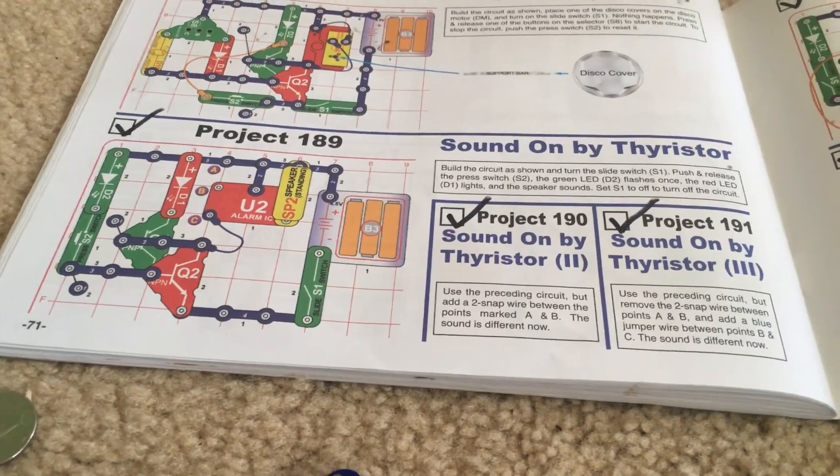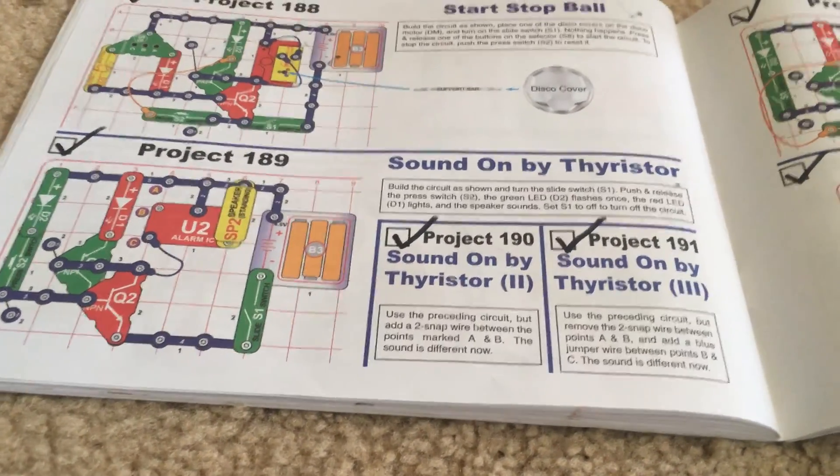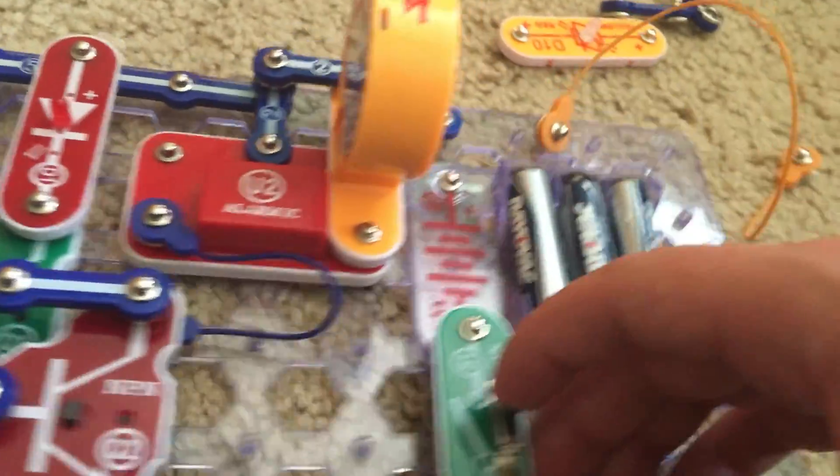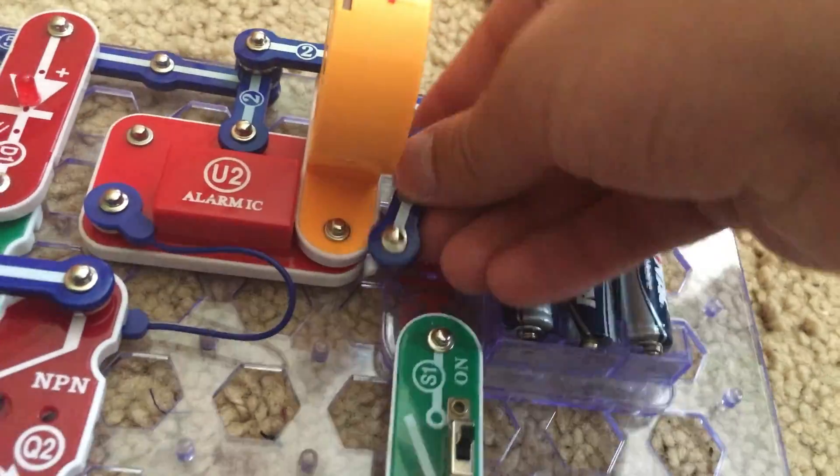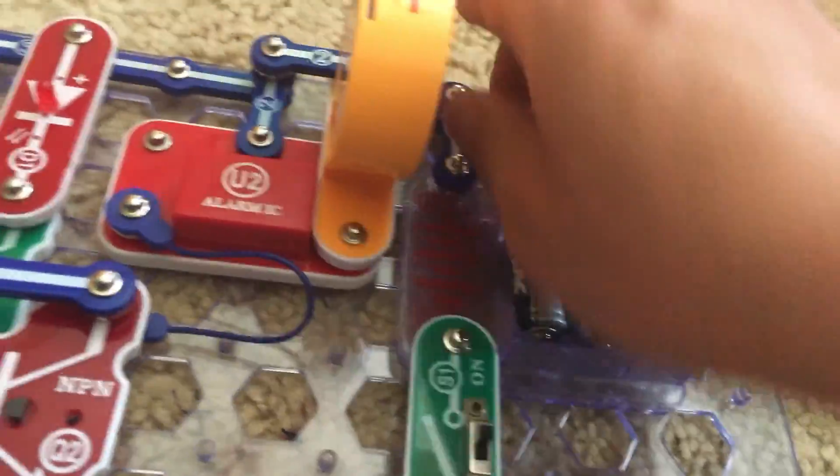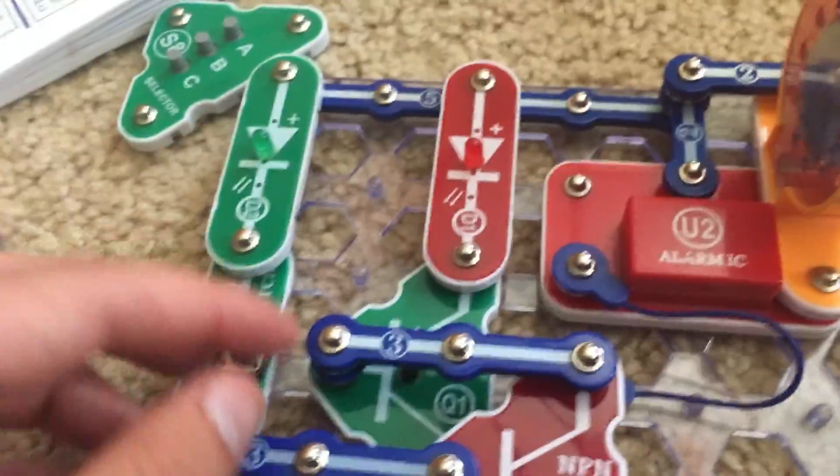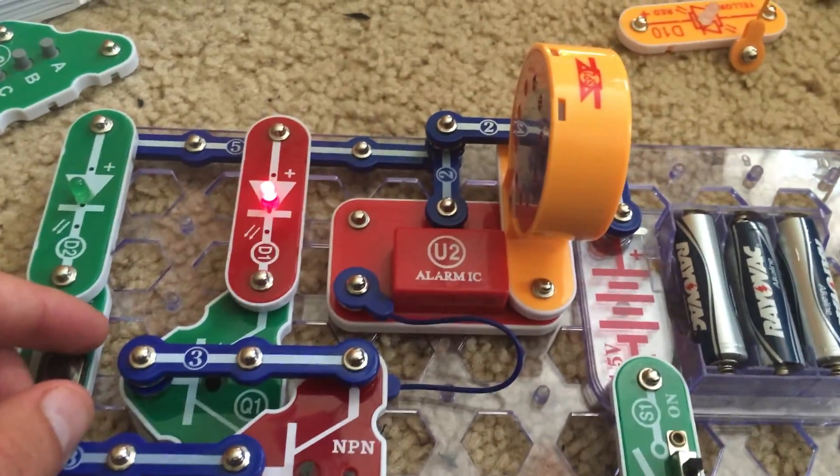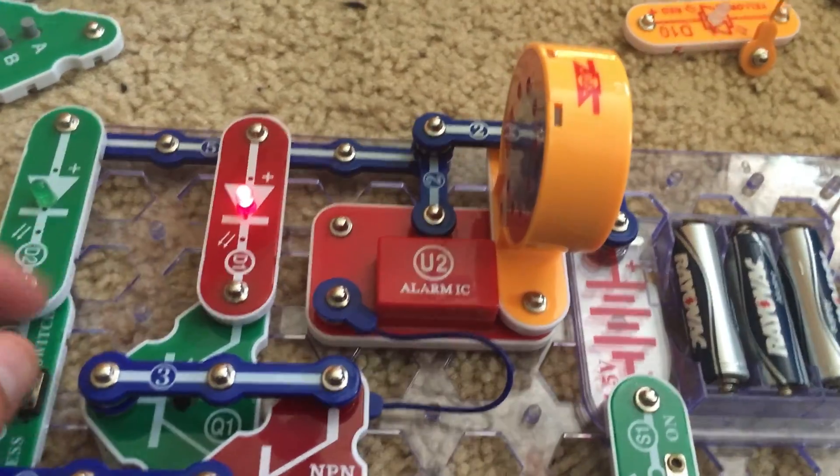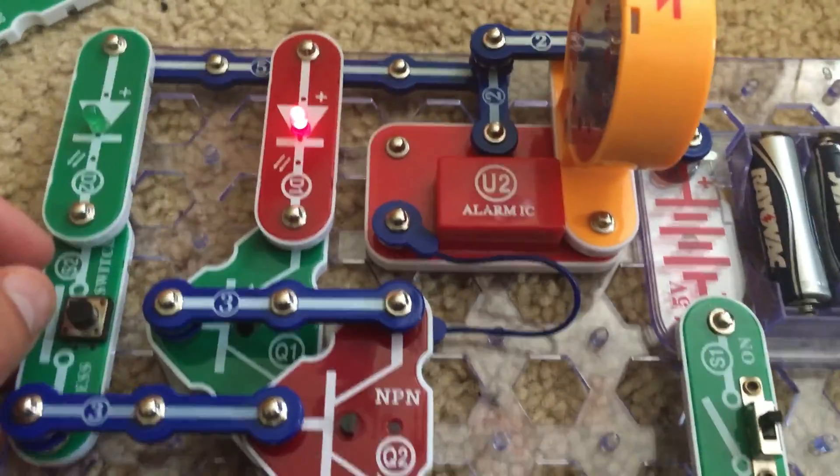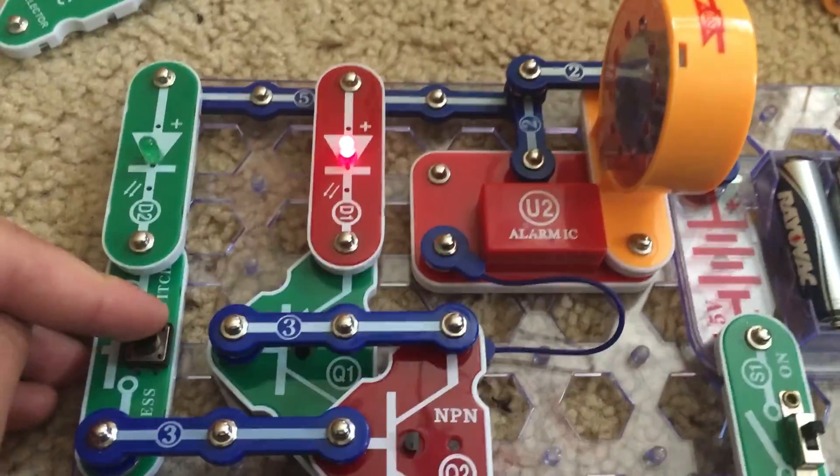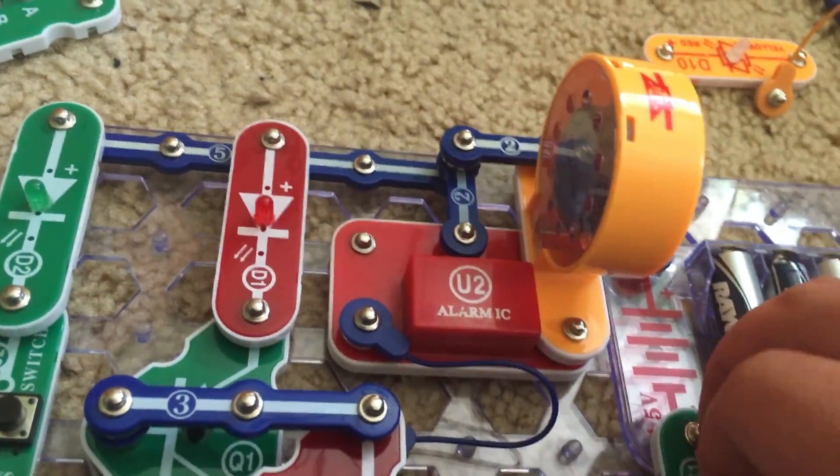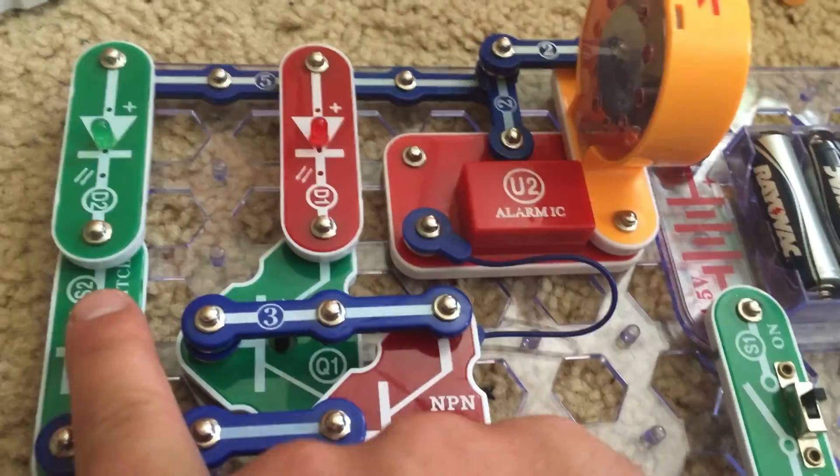Projects 189 through 191 are sound on by thrister. The slide switch is already on, but nothing happens. Forgot to put a two snap wire here. But hit the push switch, and then the alarm will sound. The red LED will turn on too. Turn the switch off to reset the circuit, and then you have to hit the press switch again.